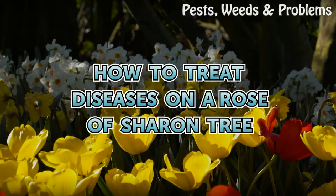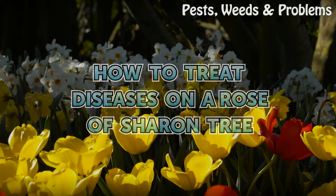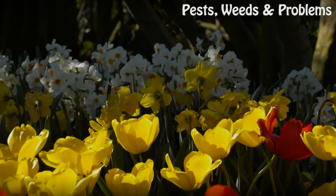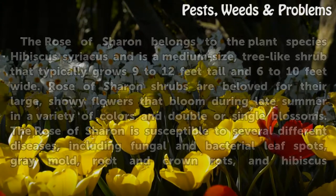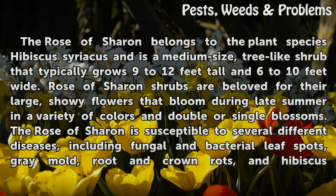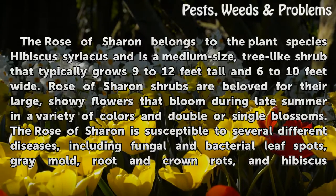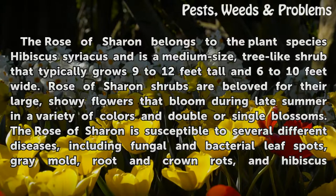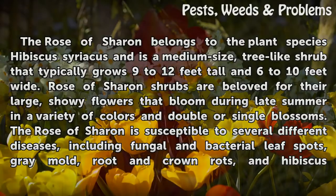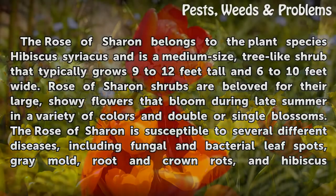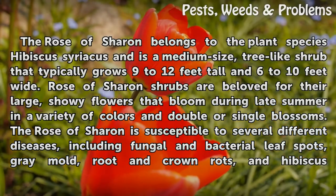How to Treat Diseases on a Rose of Sharon Tree. The Rose of Sharon belongs to the plant species Hibiscus syriacus and is a medium-size, tree-like shrub that typically grows 9 to 12 feet tall and 6 to 10 feet wide. Rose of Sharon shrubs are beloved for their large, showy flowers that bloom during late summer in a variety of colors and double or single blossoms.